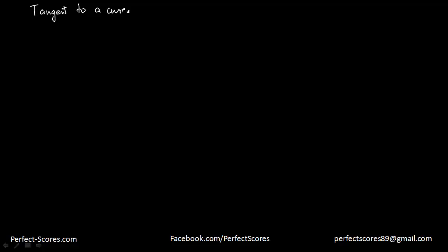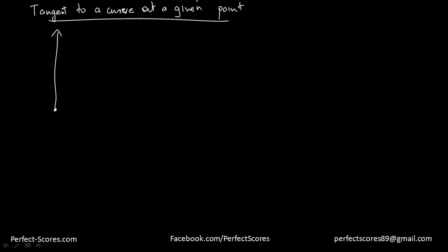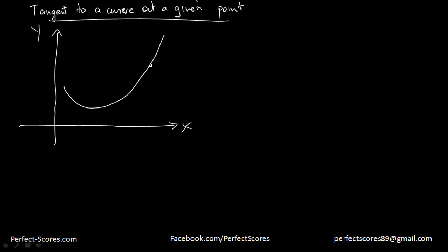So tangent to a curve at a given point. Let's suppose we have a curve with an x-axis and y-axis, and a curve like this. At a given point on the curve, I draw a tangent — something which just touches that curve. Let's suppose the x coordinate of that point is equal to a. If the x coordinate is a, then the y coordinate would be f(a) because the curve is y = f(x). So the point is (a, f(a)).